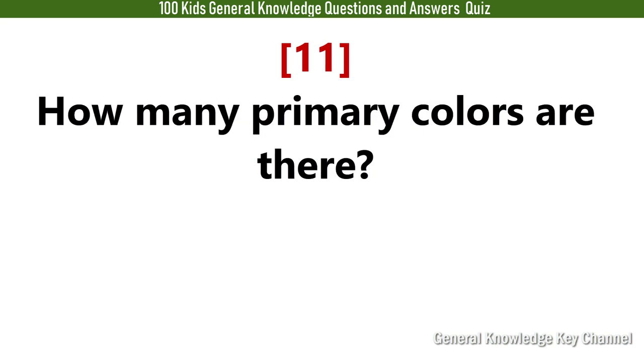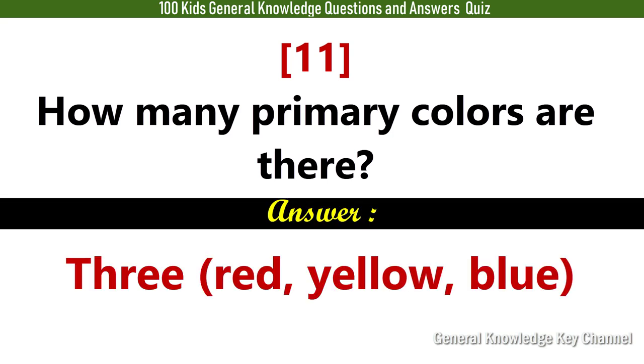How many primary colors are there? Answer: 3 — red, yellow, blue.